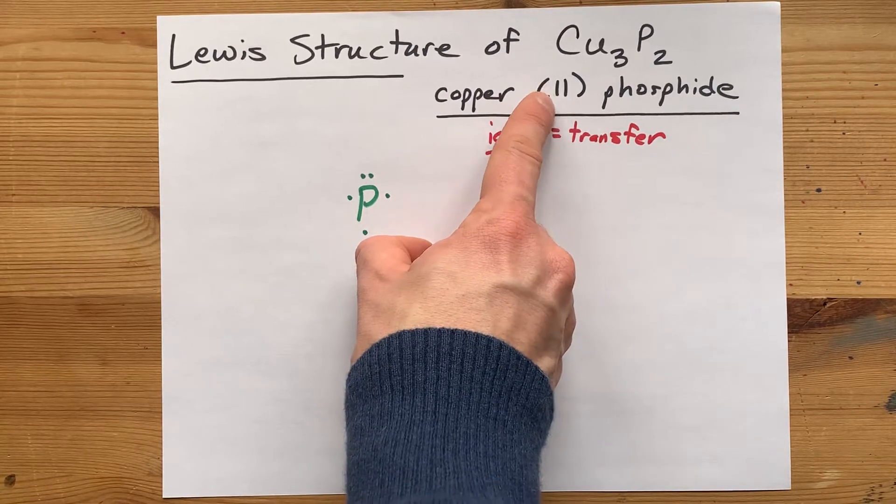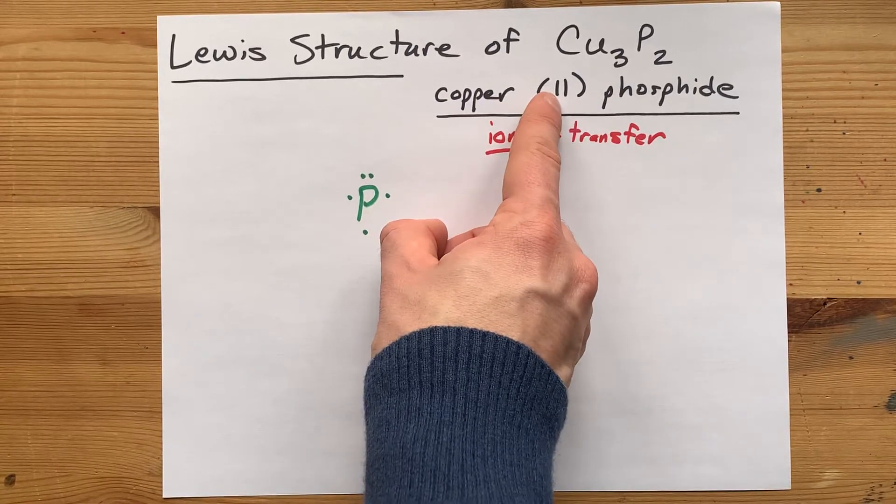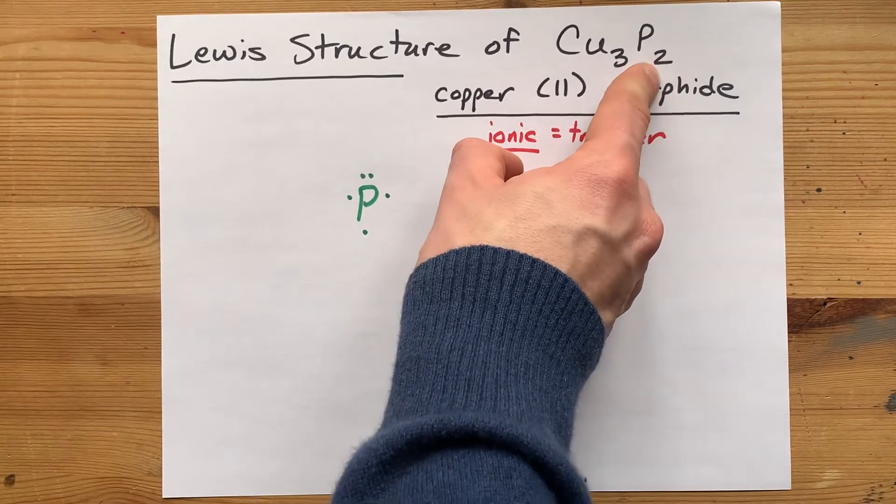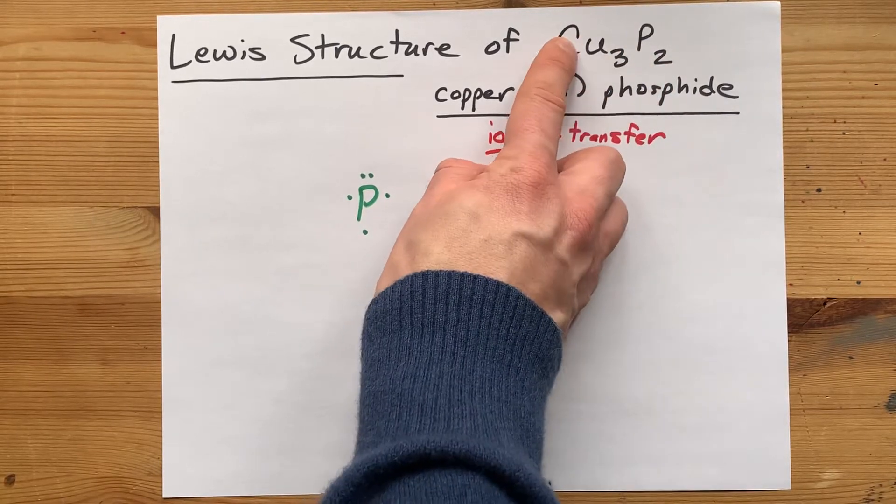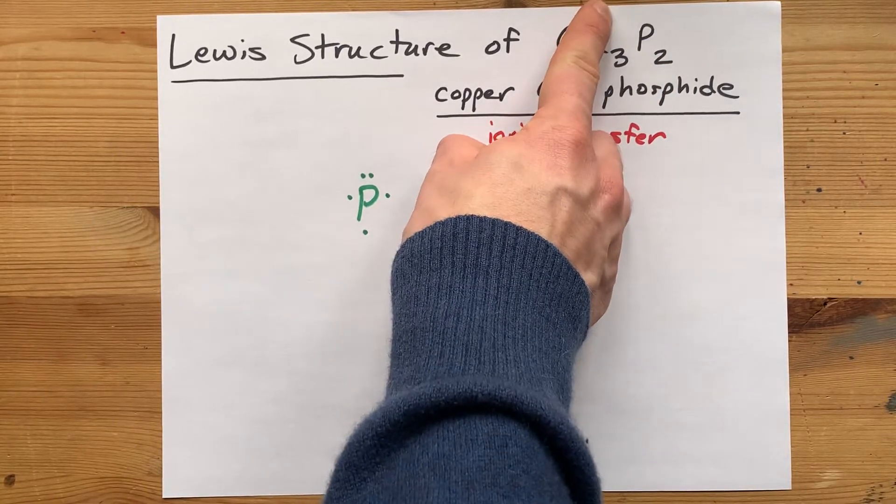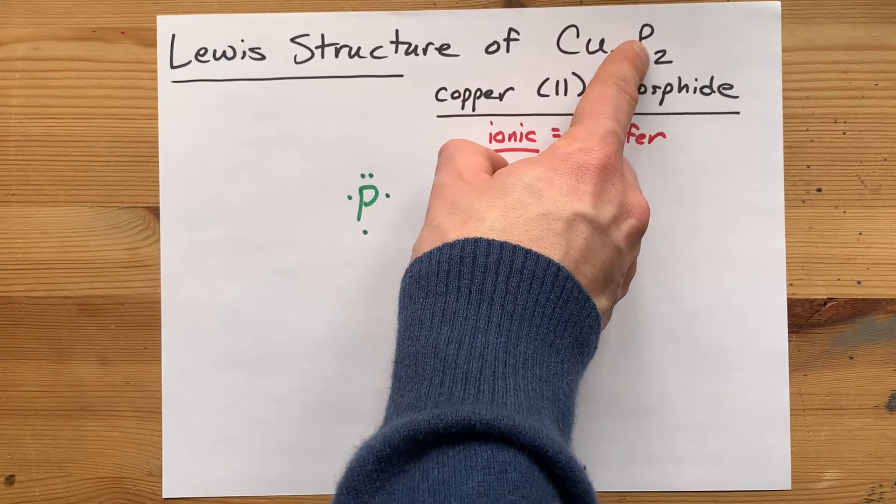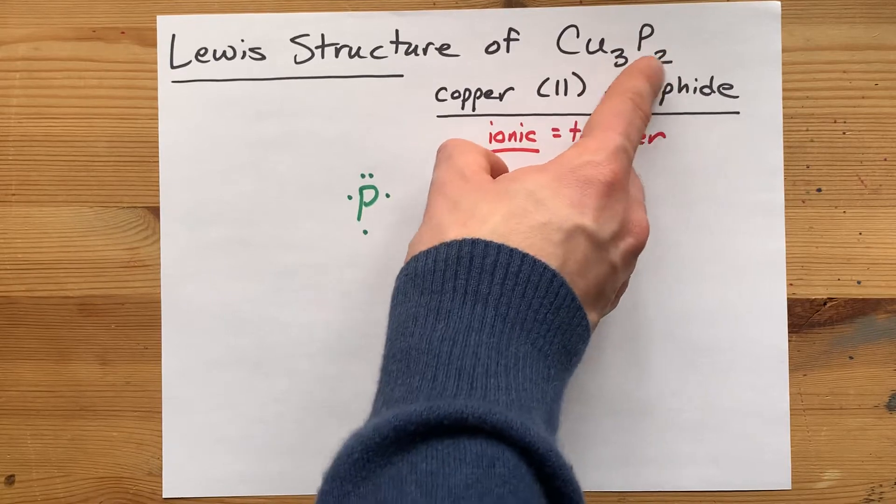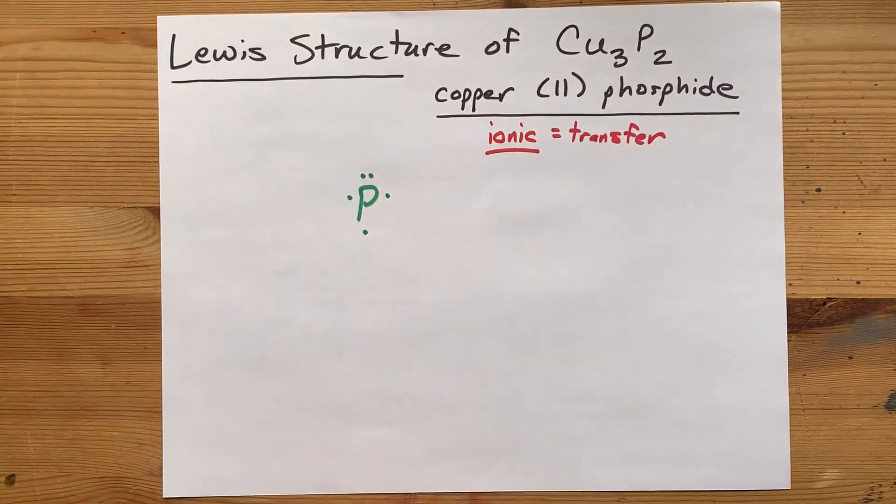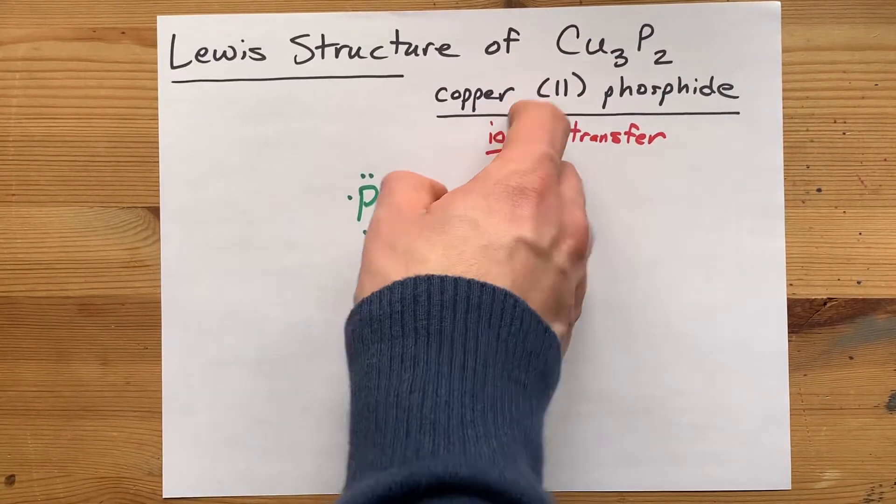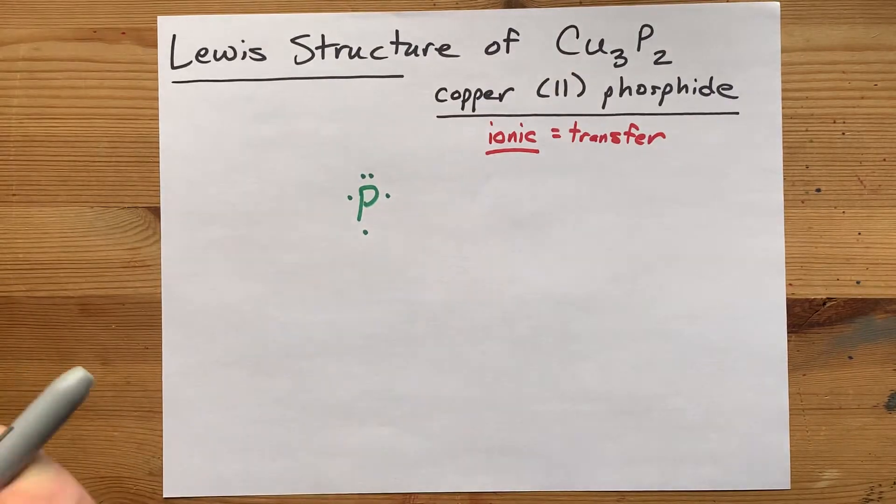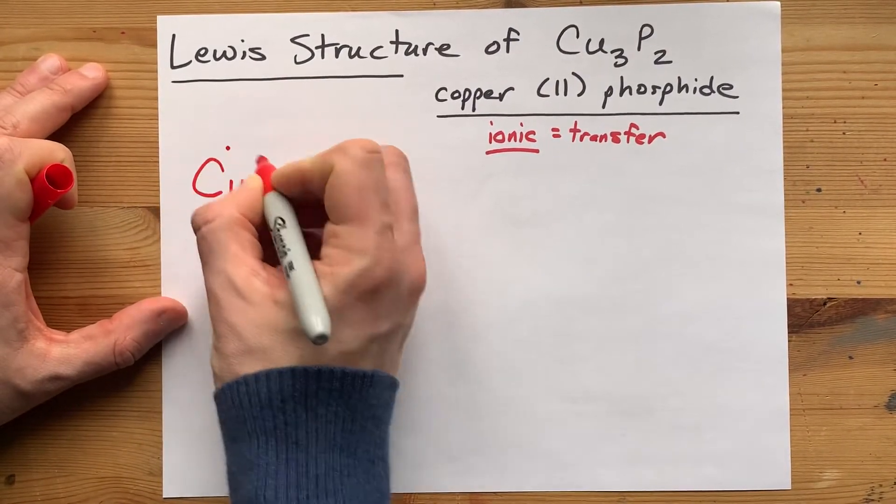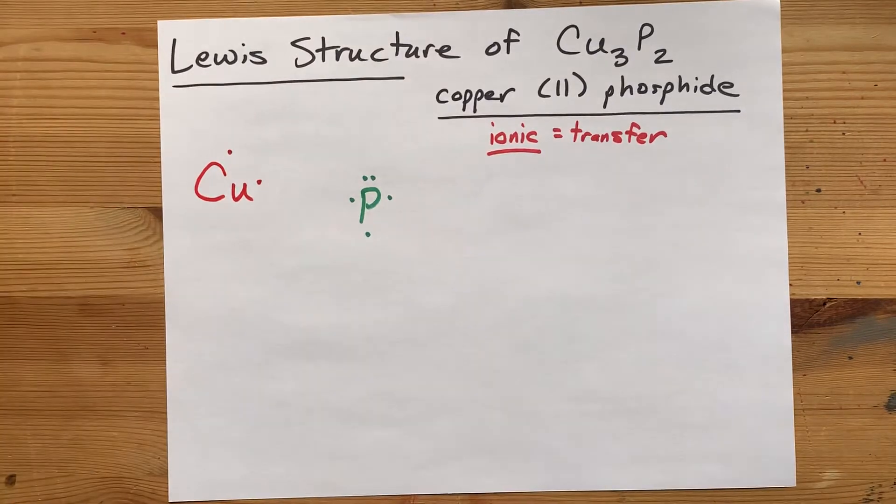Now it's here in the name if you were given the name, but it's also here in the formula. Copper had a positive 2 charge, phosphorus had a minus 3 charge. And when you crisscross them, you brought those down as subscripts. The copper has a positive 2 charge, so I want you to draw a copper with two valence electrons.